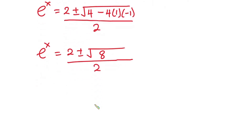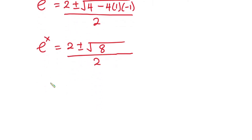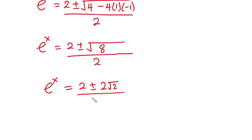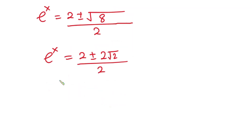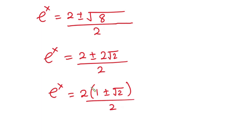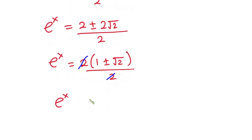Now let's simplify further. We have e to the power x is equal to 2 plus or minus the square root of 8 — which is the same as 2 root 2 — all divided by 2. We can factor out 2, so we have e to the power x is equal to 1 plus or minus square root of 2, since the 2s cancel.